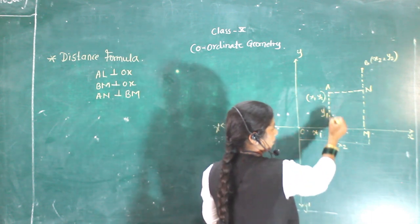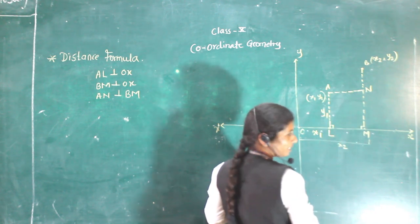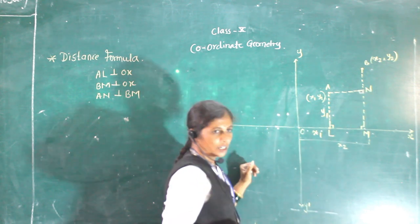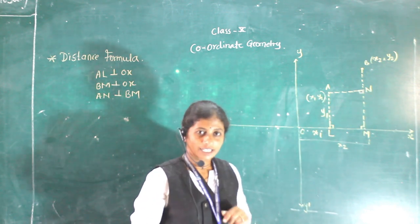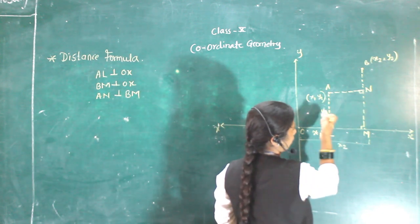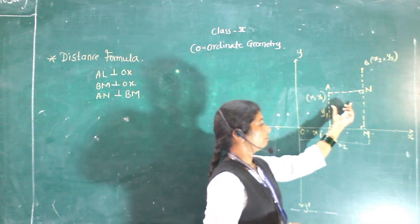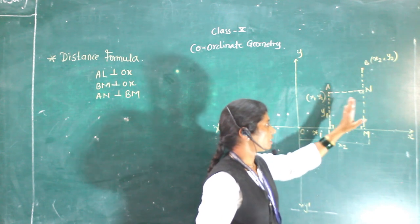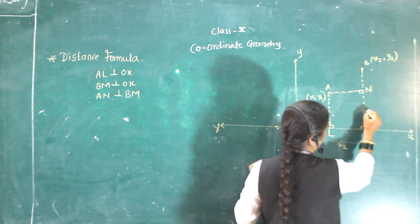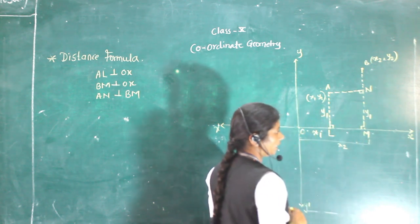When we draw perpendicular distances, each angle is 90 degrees. This forms a rectangle — opposite sides are equal. So the distance from here minus this will become y1, and N will become y2.